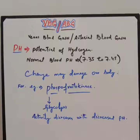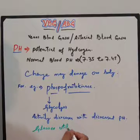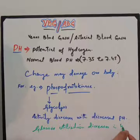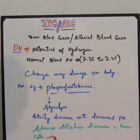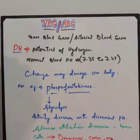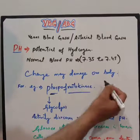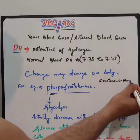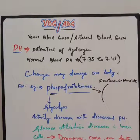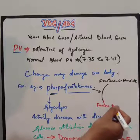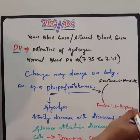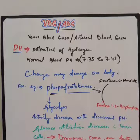Glucose utilization decreases in brain cells and even in muscle cells. The clinical consequences of this decreased pH are drowsiness, coma, and even death. You should be aware that phosphofructokinase acts upon fructose-6-phosphate and converts it into fructose-1,6-bisphosphate. This is an important step in glycolysis, and it is catalyzed by phosphofructokinase, which is pH dependent.